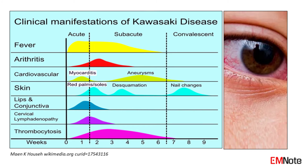Diagnosis is clinical, requiring the presence of fever and a combination of specific clinical findings. Laboratory values and echocardiography play crucial roles in supporting the diagnosis, with specific criteria indicating increased suspicion for Kawasaki disease.